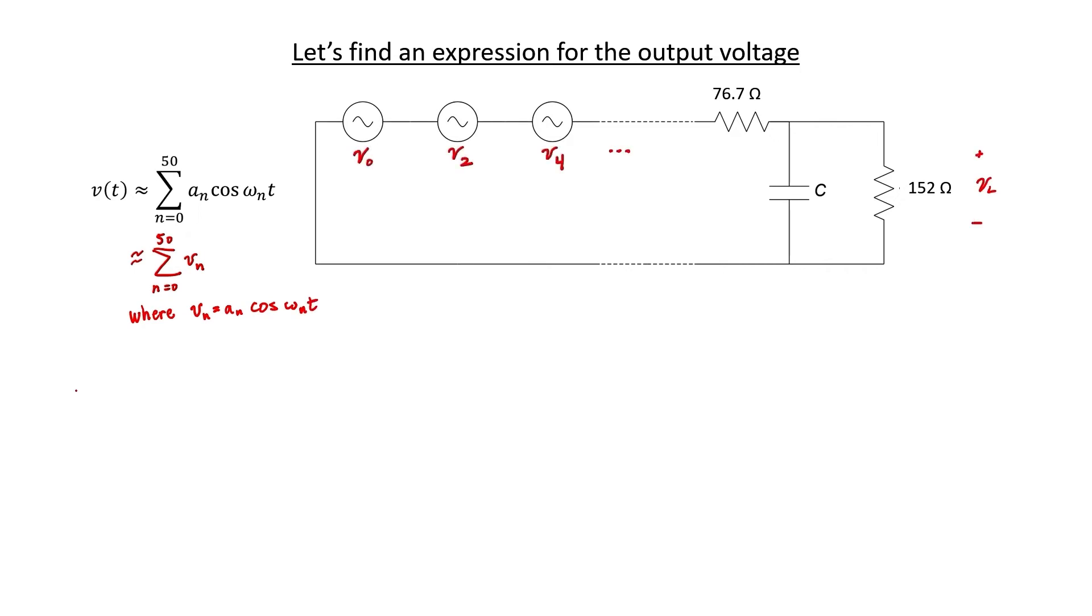Since our voltage can be expressed as a sum of cosines, we can solve the circuit separately for each one of them. We can then use superposition to find the voltage across the load. Let's draw the circuit for just one of these voltage sources in the series here.